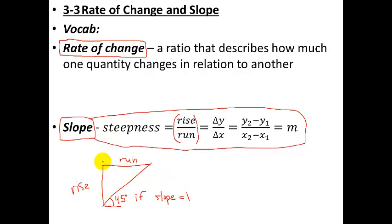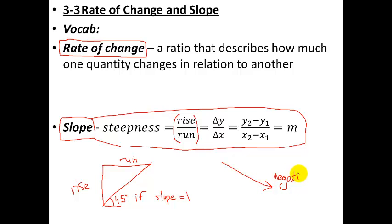If you're going up and to the right, your slope is positive. Going downhill when moving left to right gives you a negative slope.